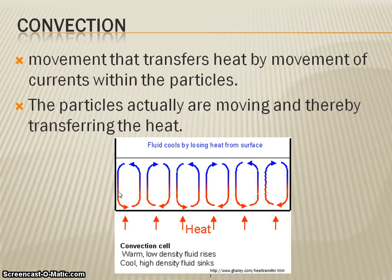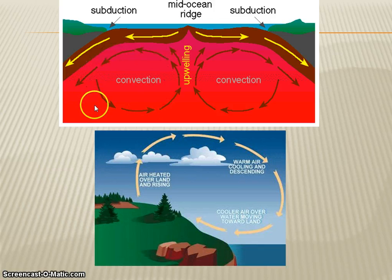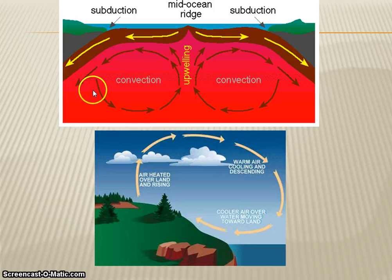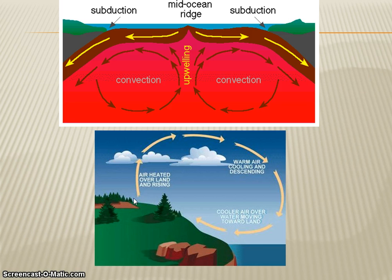Some other examples of convection include the interior of the earth, where convection currents drive continental drift and plate tectonics — the movement of the plates — and also in making wind. As air heats up it will rise, and then as it cools it will sink again.